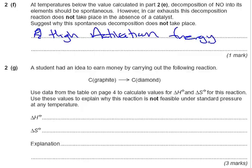A student had an idea to earn money by carrying out the following reaction: graphite to diamond. Use data from the table on page 4 to calculate values for delta H and delta S for this reaction. Use these values to explain why this reaction is not feasible under standard pressure at any temperature.